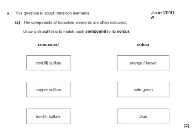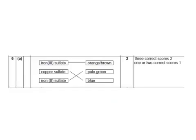If only all past paper questions were this easy at higher level. The compounds of transition metals are often colored. You need to draw a straight line to match each compound to its color. The iron(III) will be orange brown, the copper sulfate will be blue, and the iron(II) sulfate will be pale green. There lies the answer of that incredibly easy question.